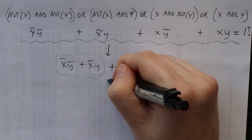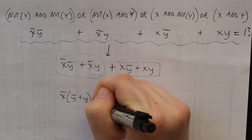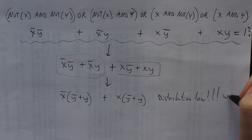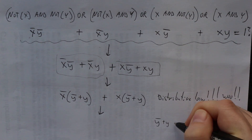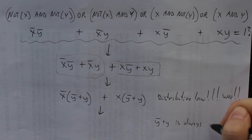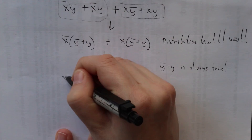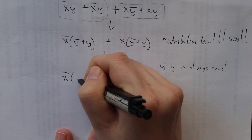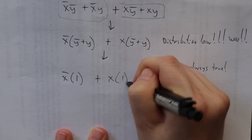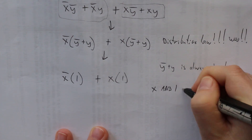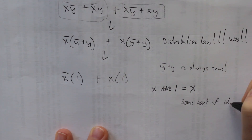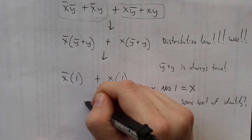I rewrote it again and then I noticed a pattern. I can use the distributive law here — I'm very proud and a bit surprised that I actually remember that from algebra. So I rewrote it like that and then I noticed I can basically factor these out, because NOT Y OR Y is always going to be true. It either is or it isn't, so one of them is always going to be true. I can just rewrite that as one. And then X AND 1 is always going to be X — some sort of identity in boolean algebra.